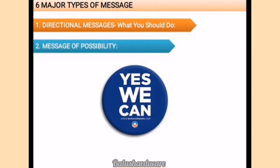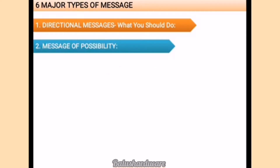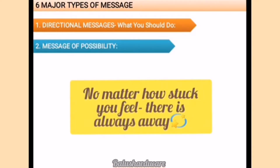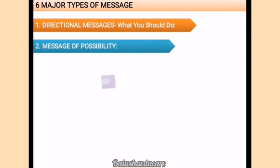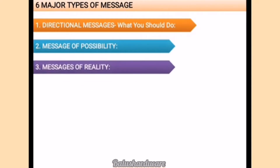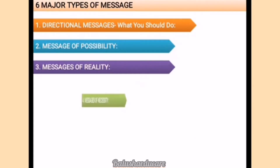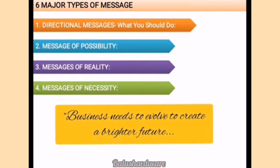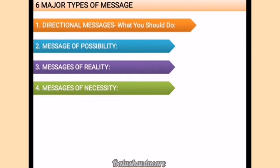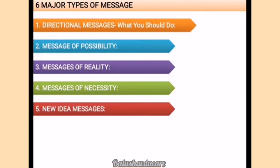There are six major types of messages we use in daily life. First: directional message — like Nike's 'Just Do It' or Apple's 'Think Differently.' Second: message of possibility — like Barack Obama's campaign slogan 'Yes We Can,' or 'No matter how tough you feel, there's always a way.' Third: message of reality — like Gandhi ji's quote, 'Your life is your message.'